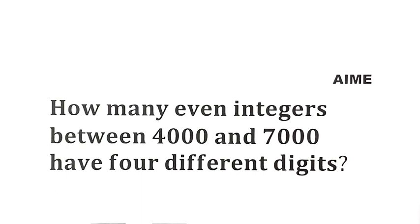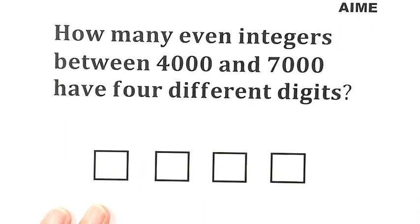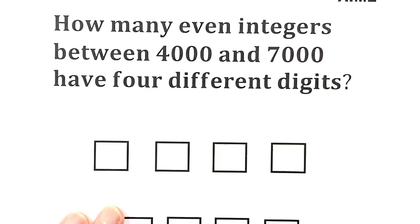First, because the number has to be even, the one's digit has five potential digits: 0, 2, 4, 6, and 8.